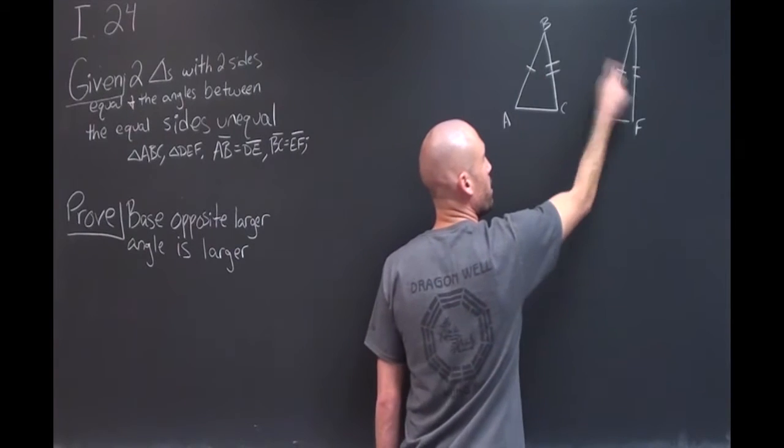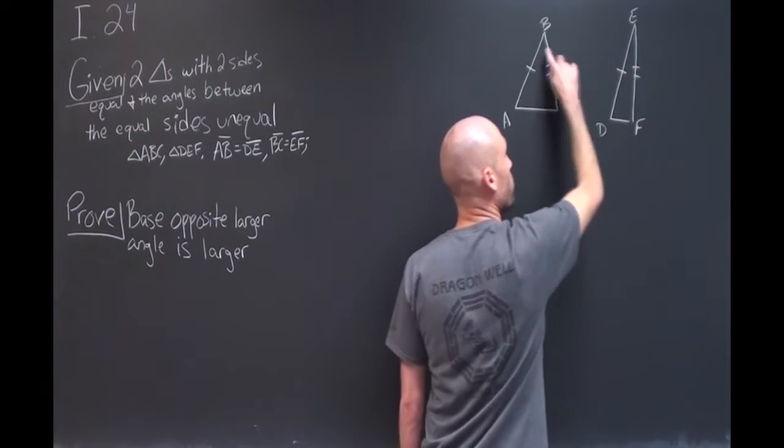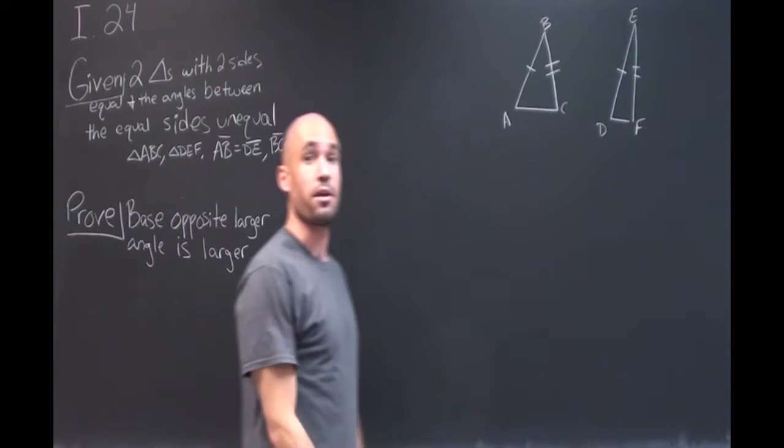So the angle between the equal sides in each triangle, one is larger than the other one.